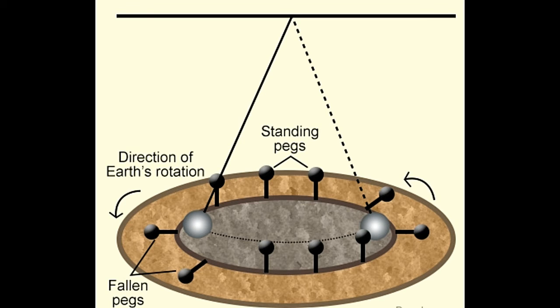This caused more of the standing pegs to come in the line of the pendulum swing, and so they too were knocked down. Essentially, the plane of oscillation of the pendulum remained constant, while the earth beneath it moved, changing the orientation of the floor with respect to it.